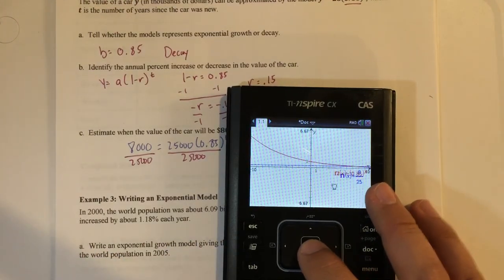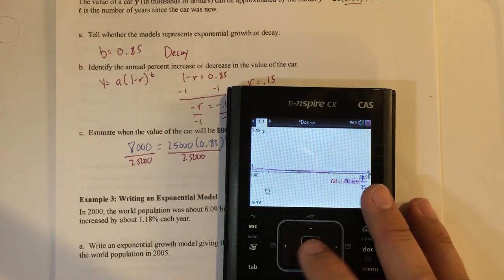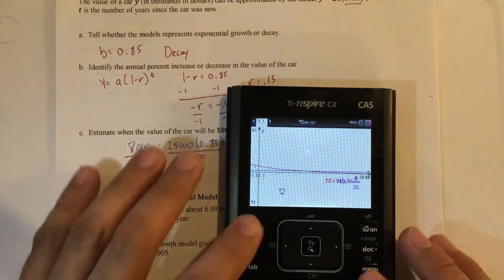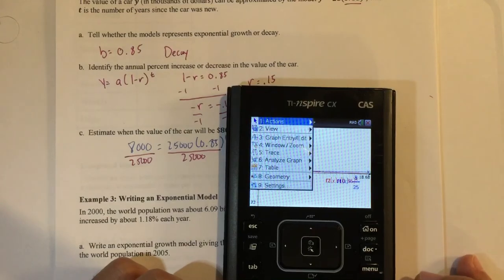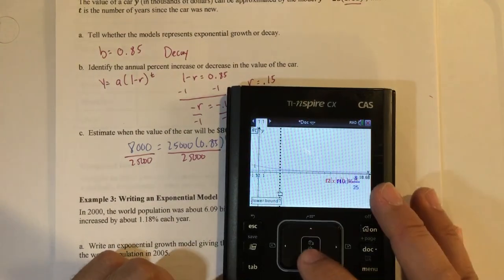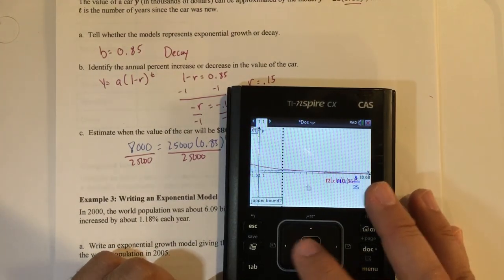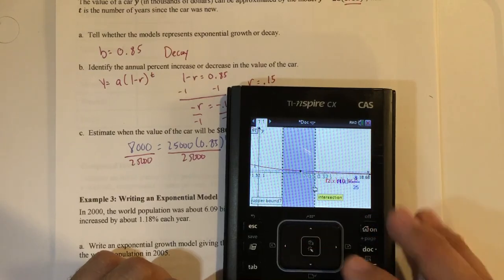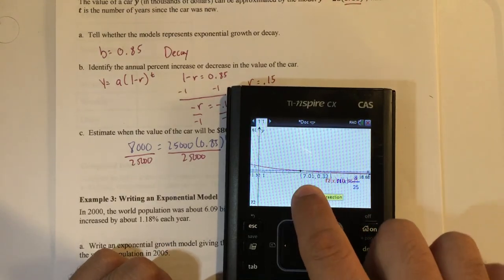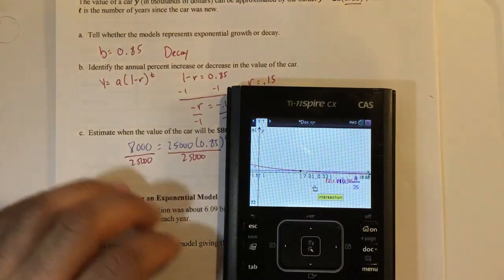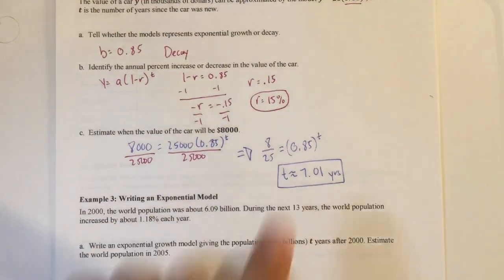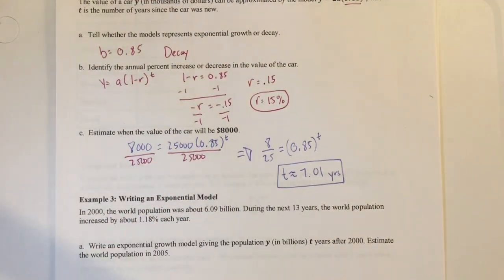So to do that, menu 6, 4. So to the left of the intersection, move it over until it says the word intersection. And you can see right there my x value is still 7.01, which is approximately 7.01 years. Alright. Thank you.